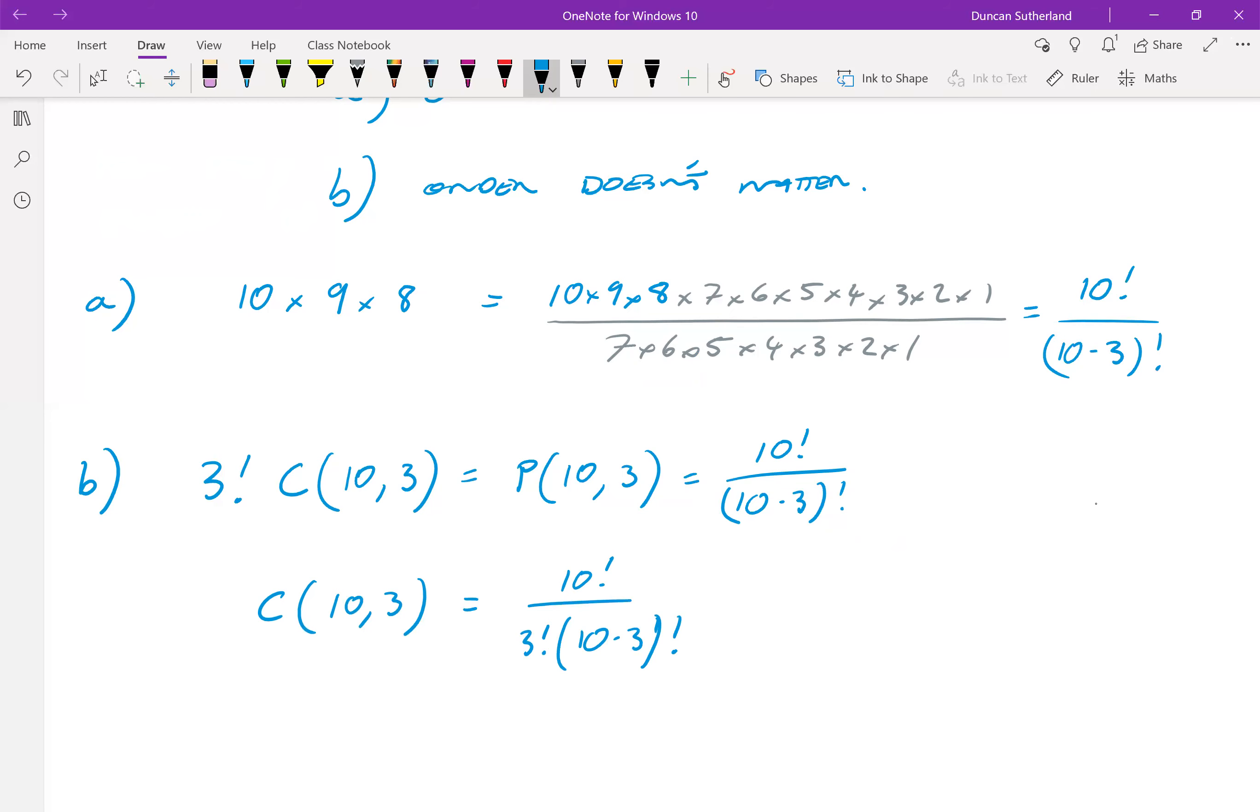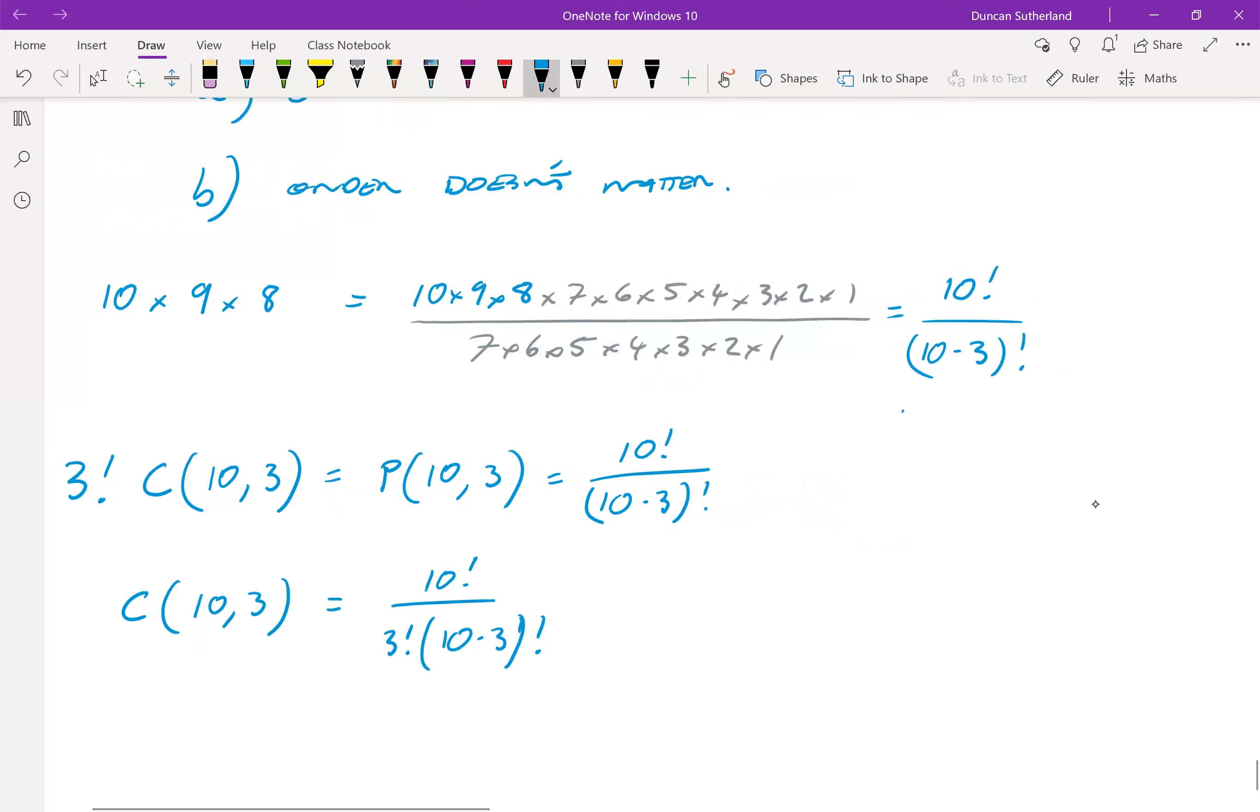So we can remember the formulae that P(N,K) is N factorial over N minus K factorial, and the combination, this is sometimes read as N choose K, that's N factorial over K factorial times N minus K factorial.